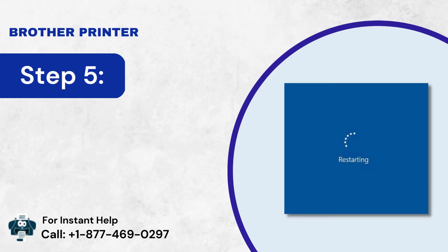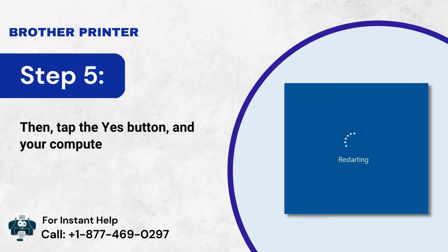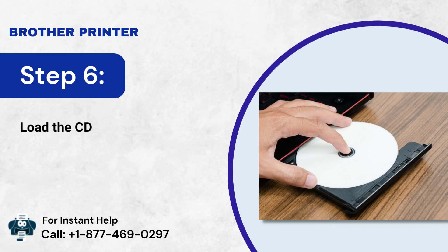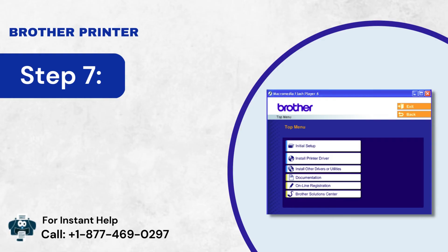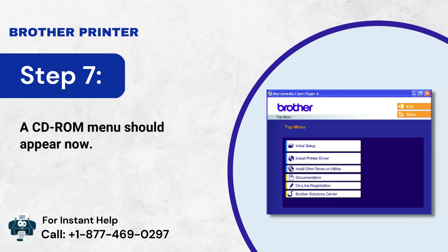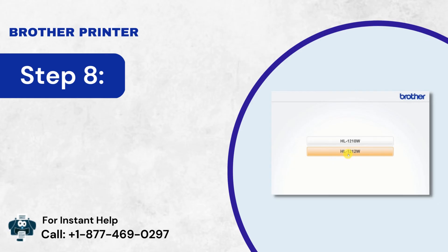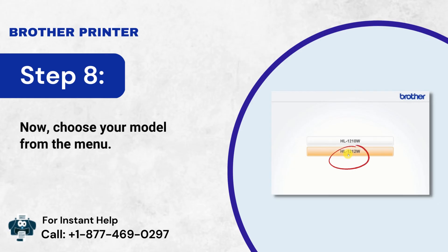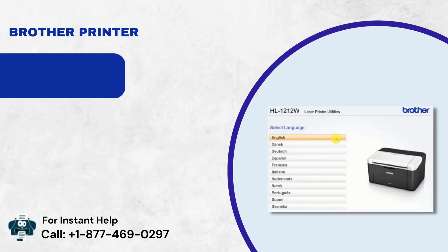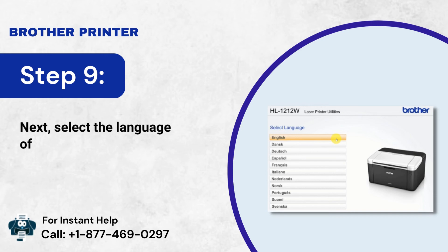Step 5: Then tap the Yes button, and your computer will restart. Step 6: Load the CD for Windows into your drive. Step 7: A CD-ROM menu should appear. Step 8: Now choose your model from the menu. Step 9: Next, select the language of your preference.